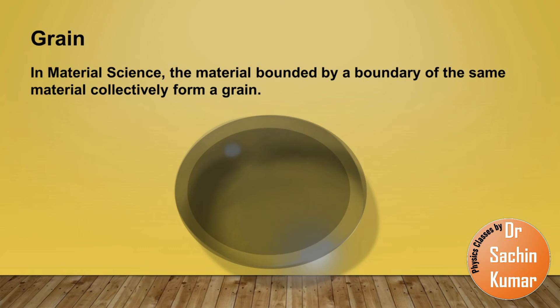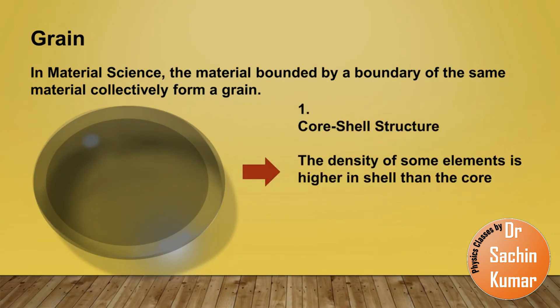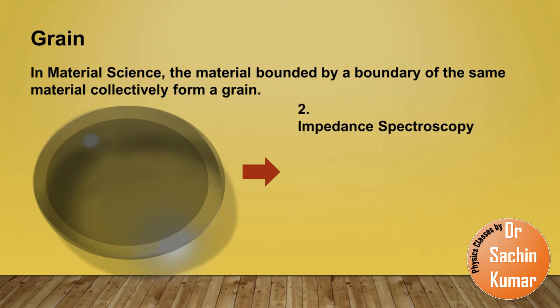There are substantial evidences generally studied as core-shell structure. The density of some elements is higher in outer shell than the core, or also in impedance spectroscopy, it has been observed that the grain boundaries are more resistive than the bulk. There are many other theories supporting this fact.